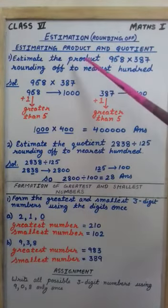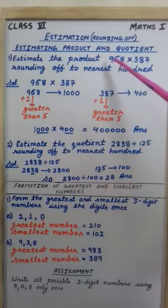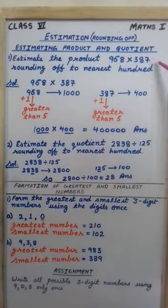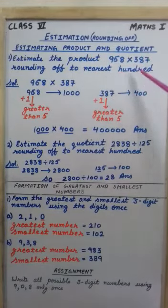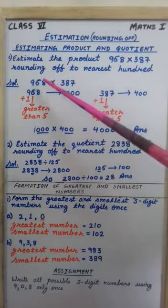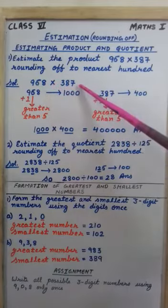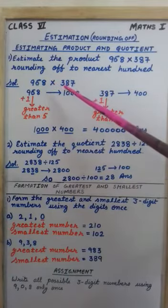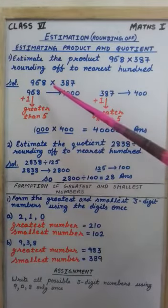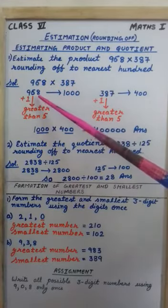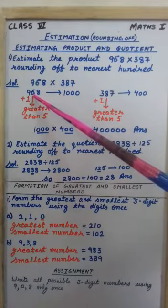First question, we have to find the product and we will round it off to nearest hundreds. The question is 968 multiplied by 387. As we have done in the previous questions, first of all we will check the digit at tens place.